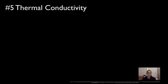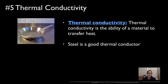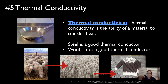Physical property number five is thermal conductivity — the ability of a material to transfer heat, meaning moving heat from one place to another. Steel is a good thermal conductor; we use stainless steel pots and pans to transfer heat from the fire to your food. Wool, on the other hand, is not a good thermal conductor — it won't transfer heat away from you. Instead it insulates you, keeping heat inside.